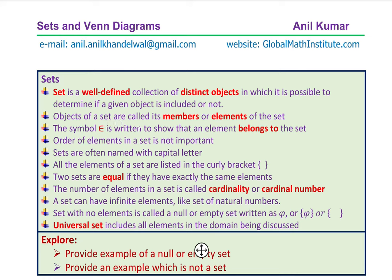Objects of a set are called the members or elements of the set. The symbol epsilon means 'belongs to' and is written to show that an element belongs to the set. The order of elements in a set is not important. So if I have three elements 1, 2, and 3, then the order 3, 2, 1 is the same as 1, 2, 3. Order is not important.